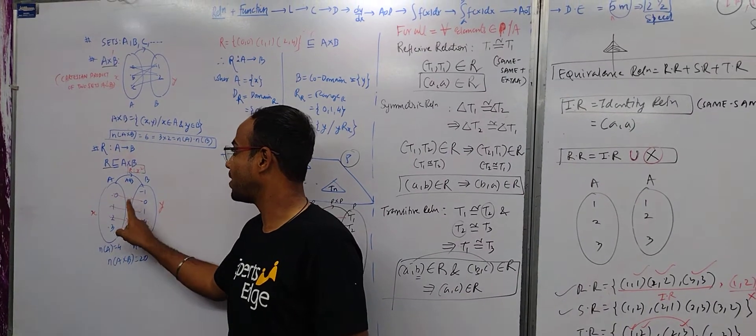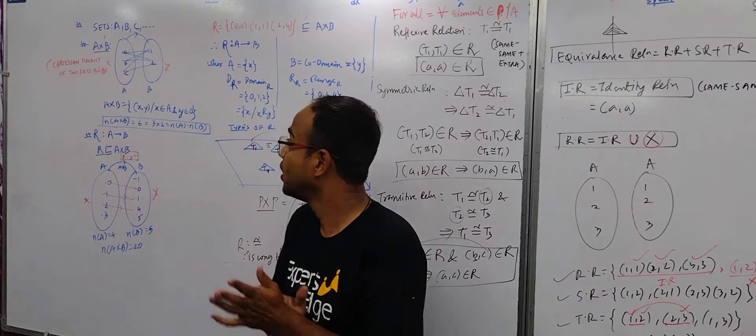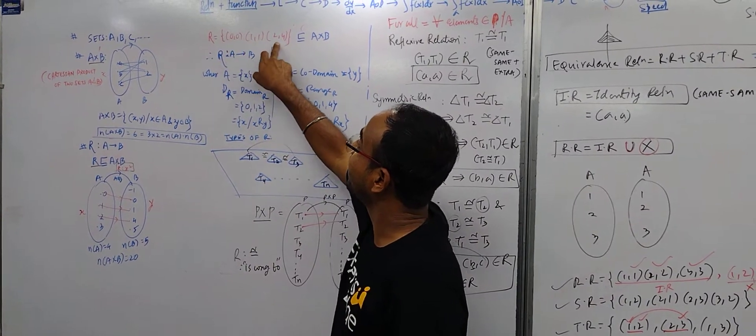So I defined relation as X square. So 0 with 0, 0 ka square 0, 1 ka square 1, 2 ka square 4, 3 ka square nahi aega. So this means how many elements are there? This is R.